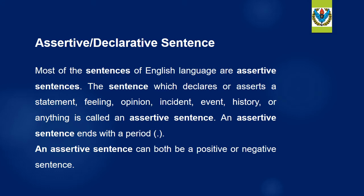In this session we are going to discuss assertive sentences — we are going to convert assertive sentences into indirect speech. Most of the sentences of the English language are assertive sentences. A sentence which declares or asserts a statement, feeling, opinion, incident, event, history, or anything is called an assertive sentence. An assertive sentence ends with a period — a full stop. An assertive sentence can be both positive or negative.